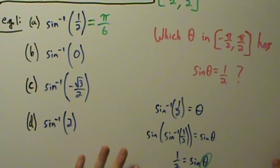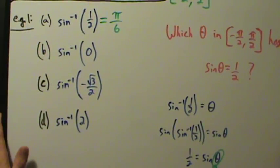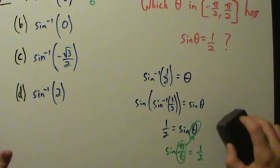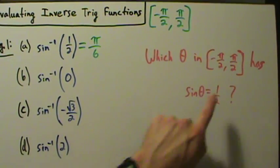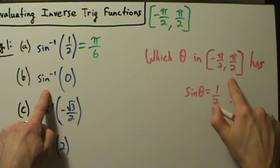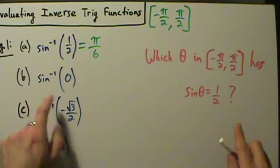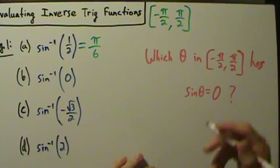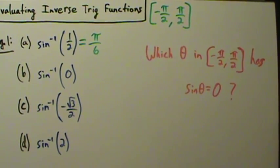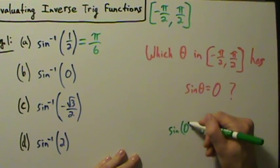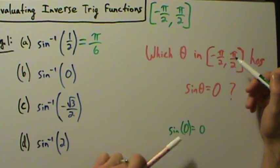For part B we approach it exactly the same way, but instead of one half we're looking at zero. We ask ourselves: which theta in this interval — negative pi over 2 to positive pi over 2 — has sine of theta equal to zero? Going back to the unit circle, sine of zero equals zero. Zero is inside this interval and sine of zero is zero, so our answer is theta equals zero.